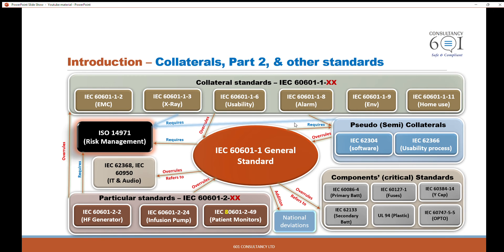You can see the arrows, and there are three phrases: overrules, requires, and refers to. When it says overrules — let's start from the particular standard — the particular standard overrules the collateral standard, and the collateral standard overrules the general standard.